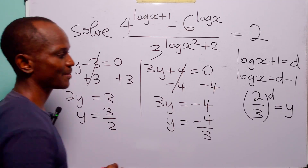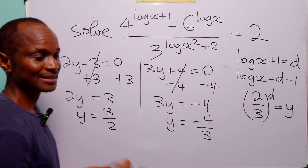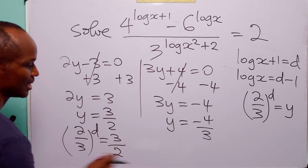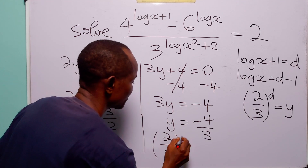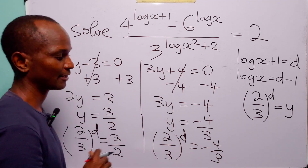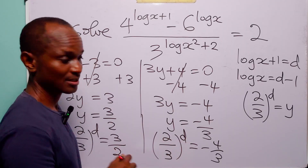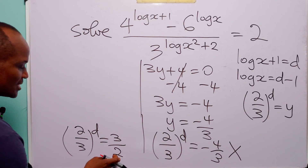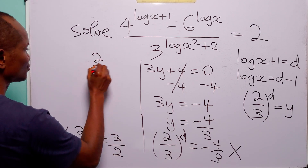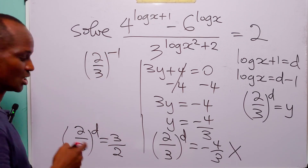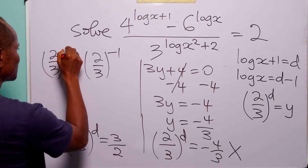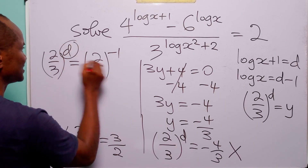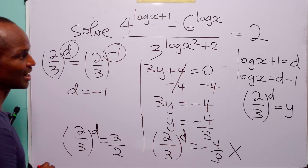Recalling that y equals 2 over 3 to the power d, the first case gives 2 over 3 to the power d equals 3 over 2, and the second gives 2 over 3 to the power d equals minus 4 over 3. Since there is no real value of d that yields a negative output, the second solution is rejected. For the valid case: 2 over 3 to the power d equals 2 over 3 to the power minus 1, so d equals minus 1.